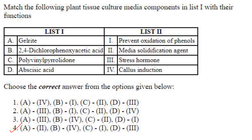Continuing the matching: polyvinyl pyrrolidone prevents oxidation of phenols — C1. Abscisic acid is a stress hormone — D3. So A2, B4, C1, and D3 is the answer. Answer is option 4.